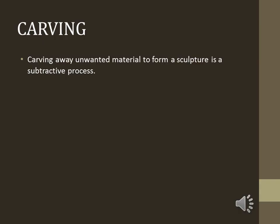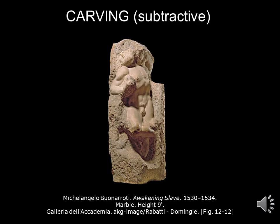The next sculptural method is carving. In carving, you carve away unwanted material to form a sculpture — this is a subtractive process. This slide is an example of carved marble sculpture by Renaissance artist Michelangelo, titled Awakening Slave — one of four unfinished marble sculptures of slaves he left behind. An artist working with marble uses a hammer and chisel to delicately carve away details. Michelangelo famously said that he was attempting to release the figure from the stone.